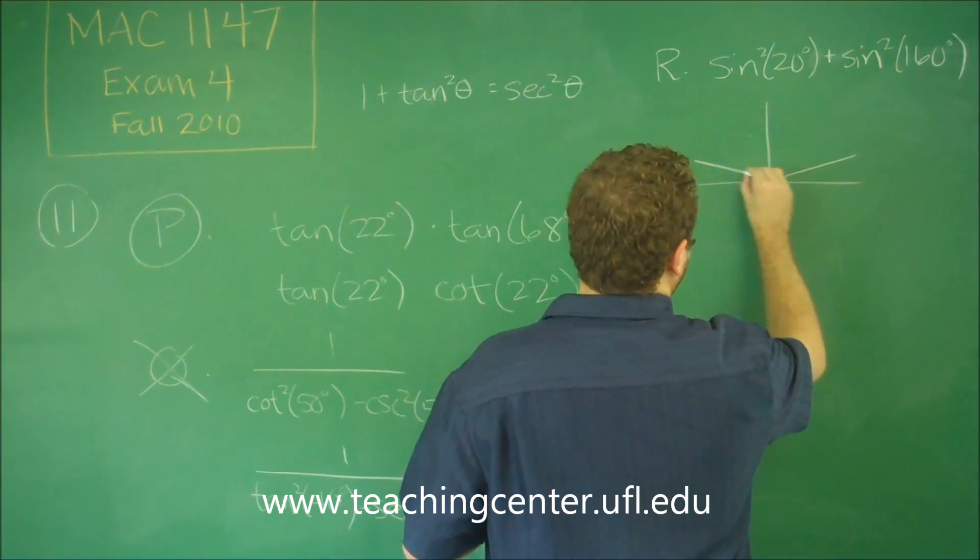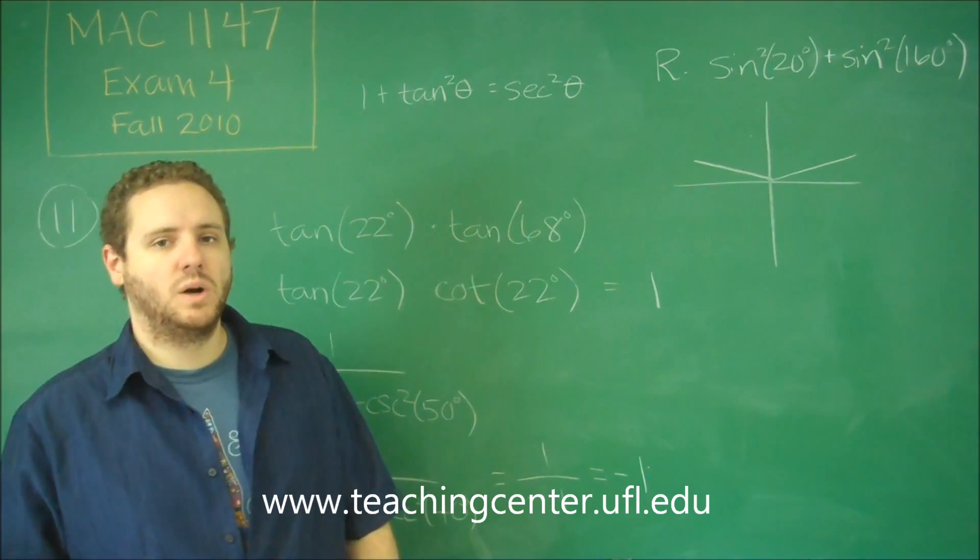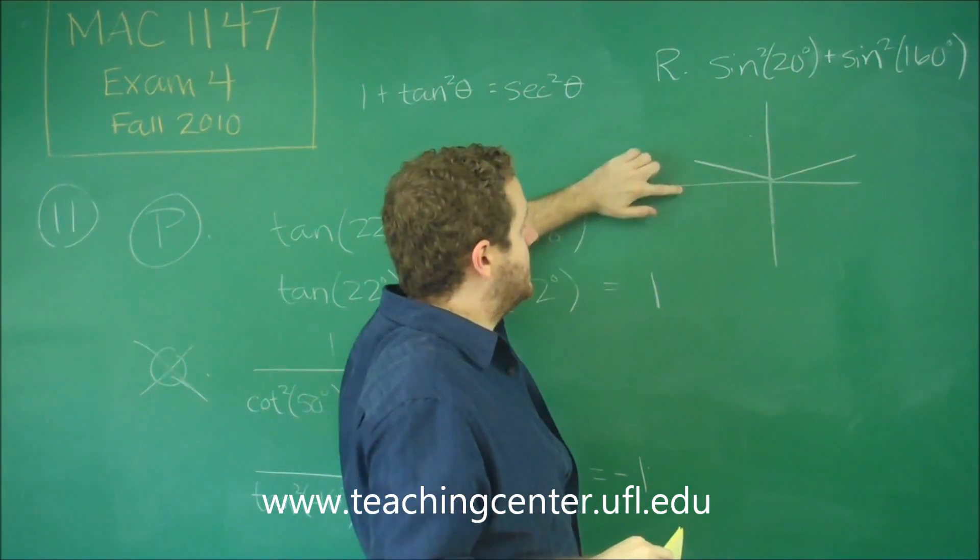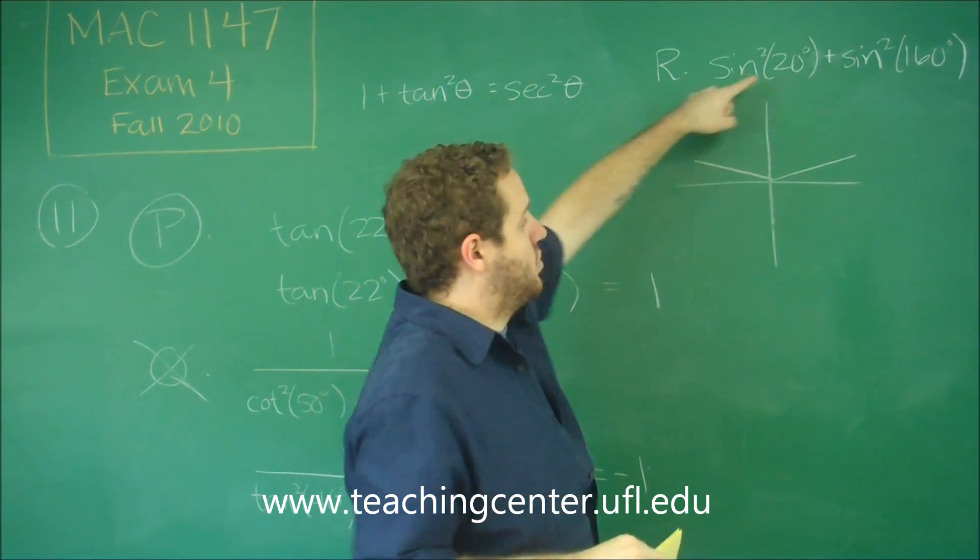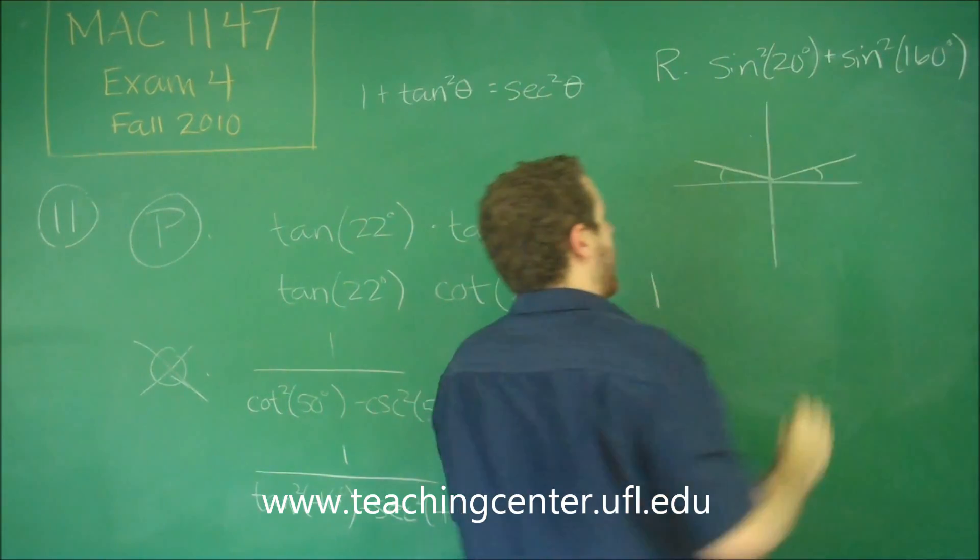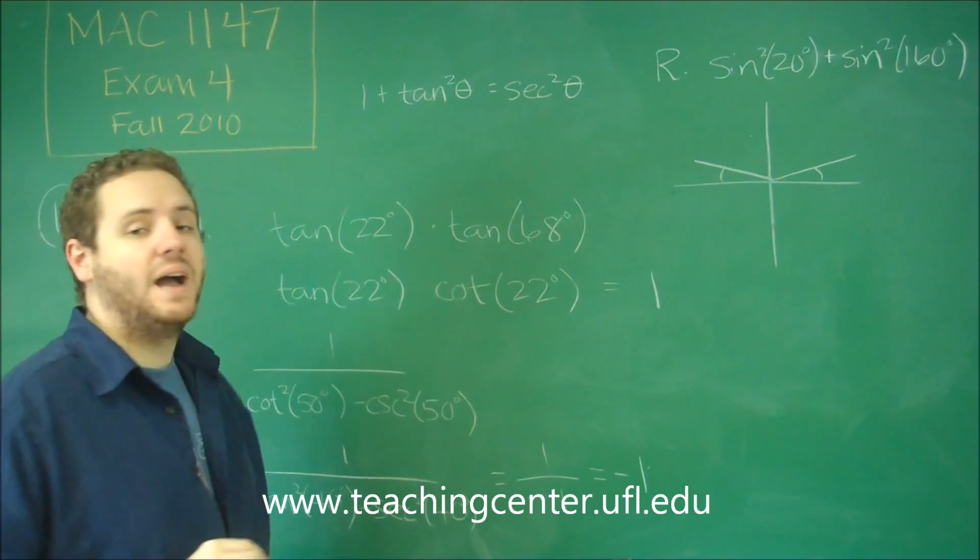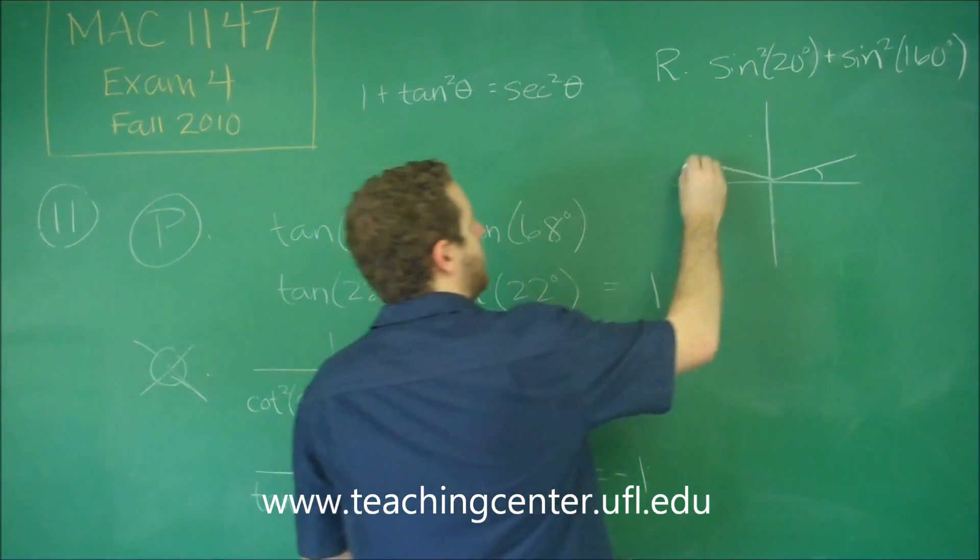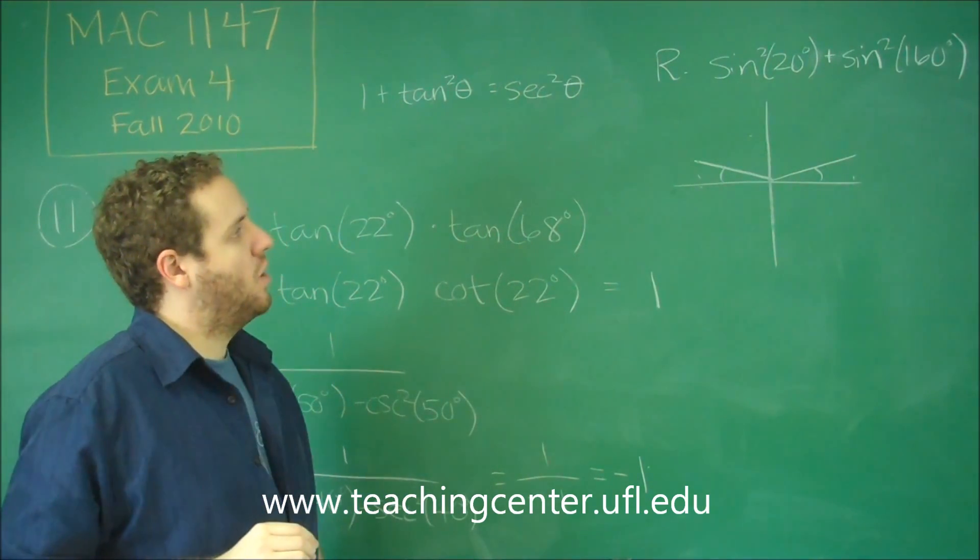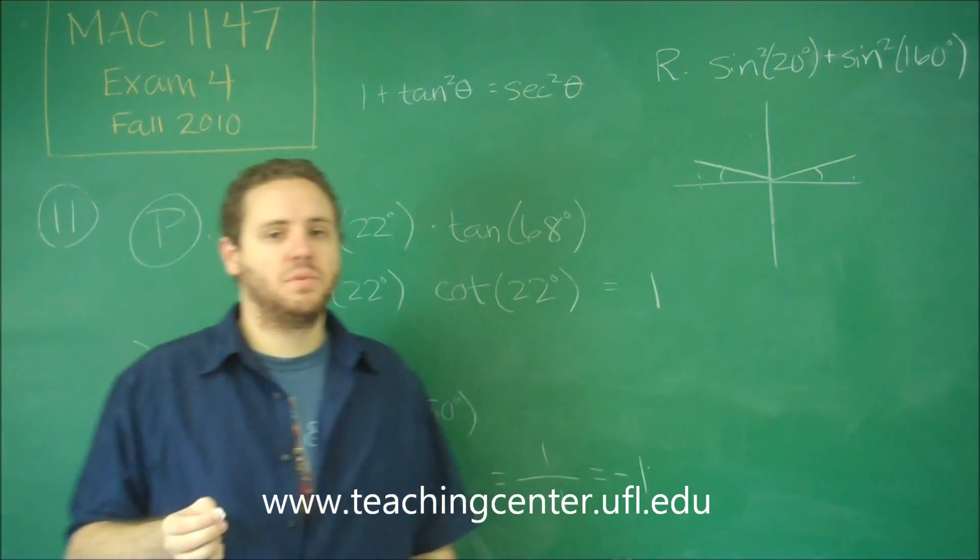And 160 is the same angle measure except in the other quadrant. Because think about it, all the way around has to be 180. So 160 is 20 up from that. 20 is 20 up from the beginning. So these are both angles of 20 if you think of them towards the x-axis. And sine is the y part. Well, the y part of these is definitely the same.